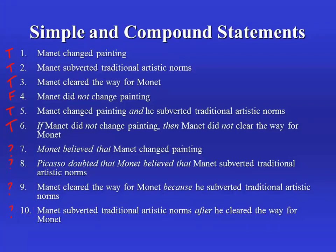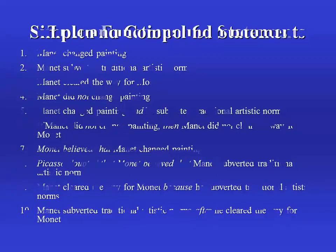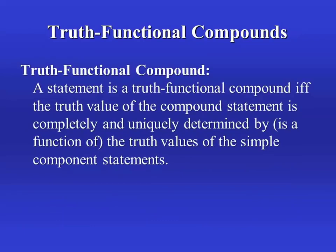What we're going to say is that four, five, and six are truth-functional compounds, whereas seven, eight, and nine are non-truth-functional compounds. A truth-functional compound is one in which the truth value of the compound statement is completely and uniquely determined by the truth values of the simple component statements. A non-truth-functional compound is one where this is not the case — where we need information beyond just the truth values of the components in order to determine the truth value of the whole.